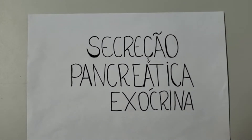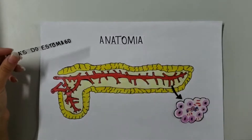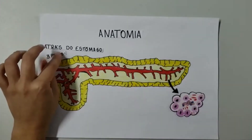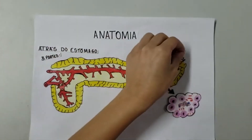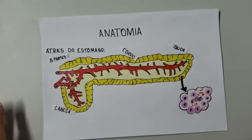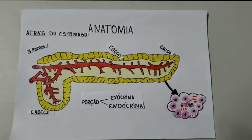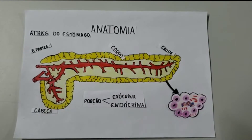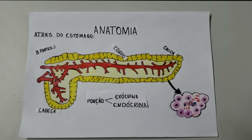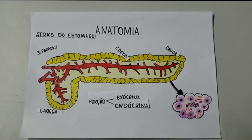Secreção pancreática exócrina. O pâncreas é um órgão de formato alongado que se localiza horizontalmente atrás do estômago, dividido anatomicamente em três partes: cauda, corpo e cabeça. Ele se divide em porção endócrina e exócrina. A porção exócrina compreende 90% do órgão e secreta aproximadamente 1 litro de líquido por dia no duodeno. Esse líquido contém enzimas que digerem todas as categorias de alimento, fazendo do pâncreas um órgão muito importante no processo de digestão.